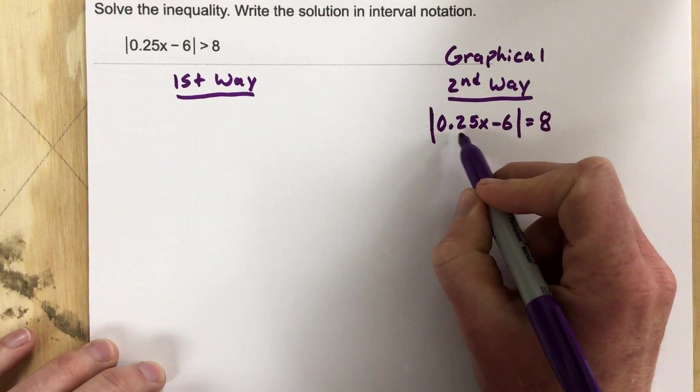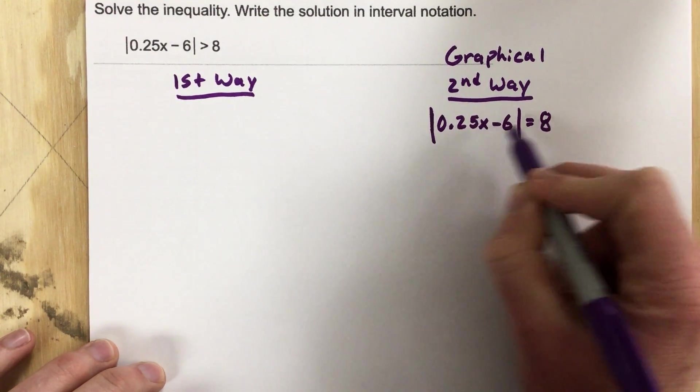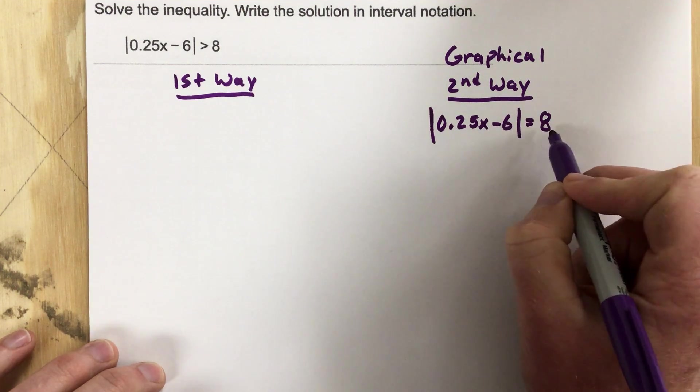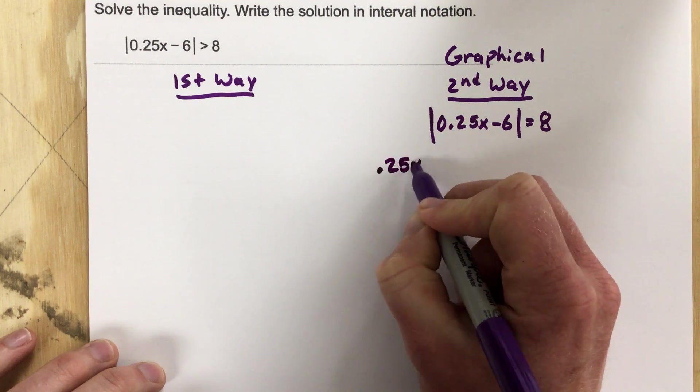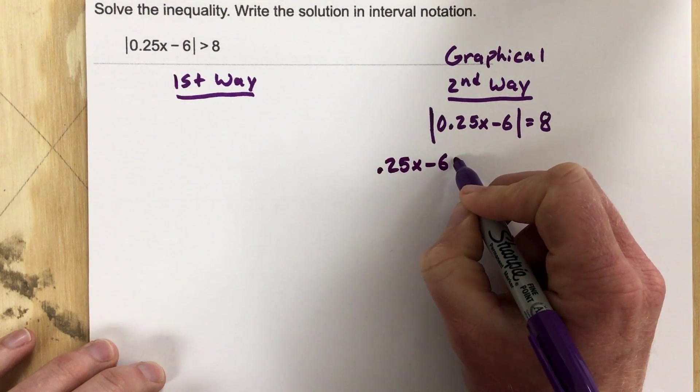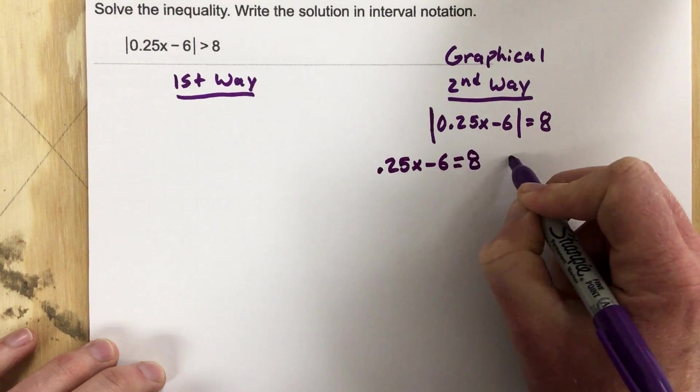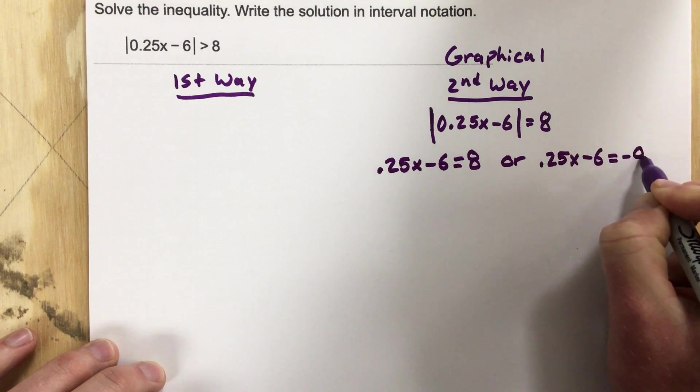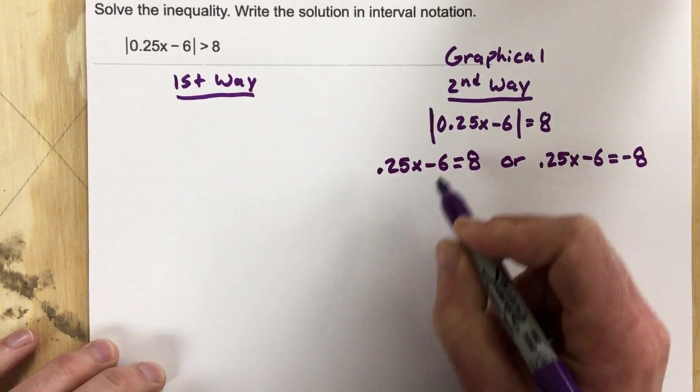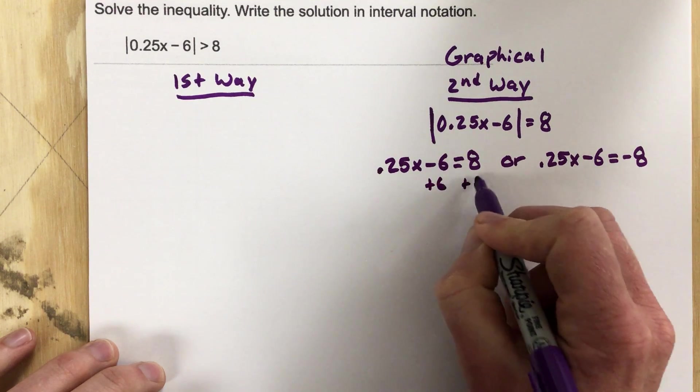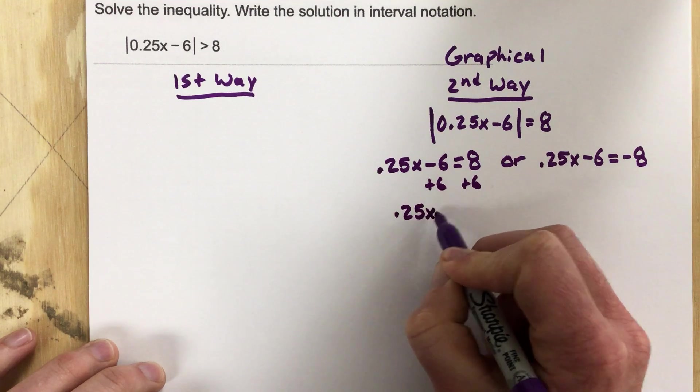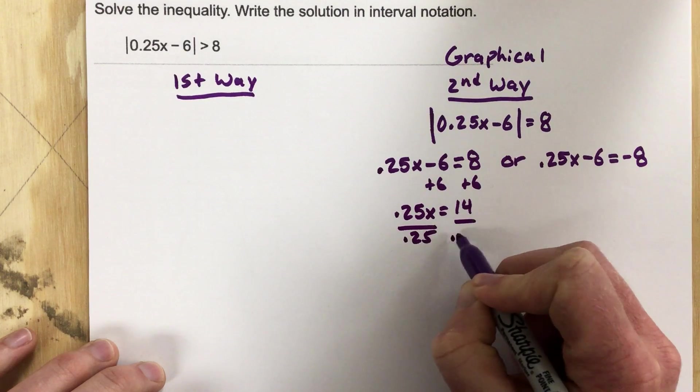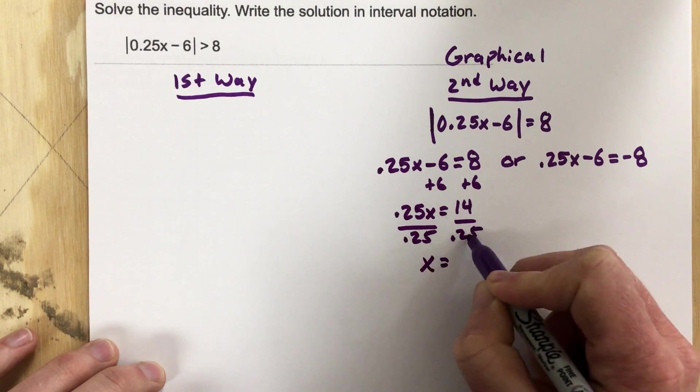And then what I'm going to do is say there's two equations. This has to produce an 8 or it has to produce a negative 8 inside the absolute value. So I'm going to say 0.25x minus 6 equals 8, or 0.25x minus 6 equals negative 8. Now I'm going to add 6 to each side. So that's 0.25x equals 14, divide by 0.25, so x equals 14 divided by 0.25.